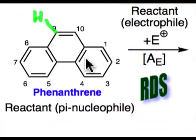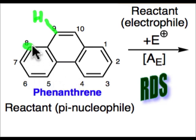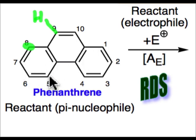Why didn't the reaction take place elsewhere — anywhere else on the molecule, such as position 8, or its symmetry-equivalent site number 1, or for that matter any of these other positions?